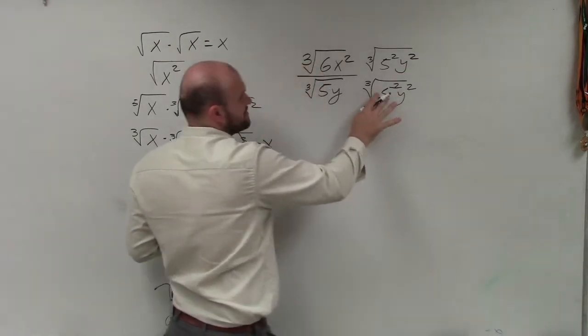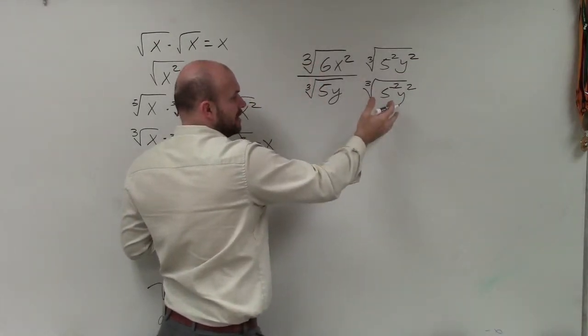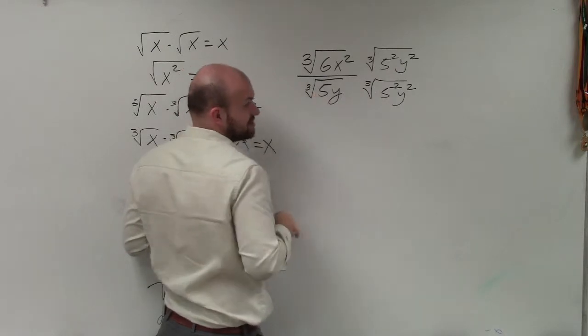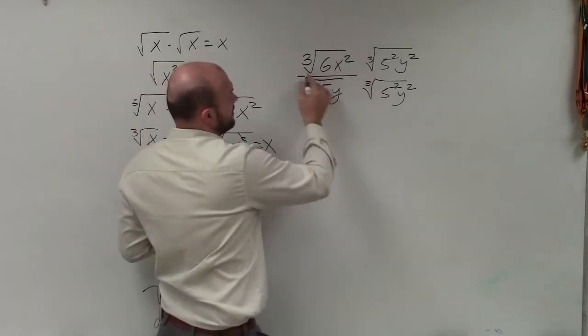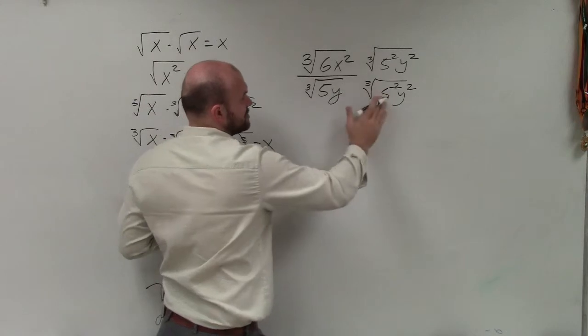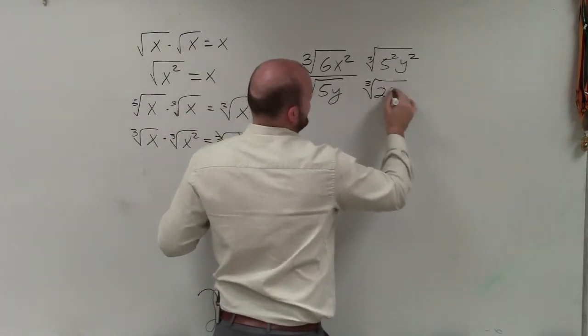All right, now notice, that's obviously 5 squared is 25, and then 25 times 5 is going to be 125. All right, so let's just rewrite this as 25y squared. Let's make this a little bit easier.